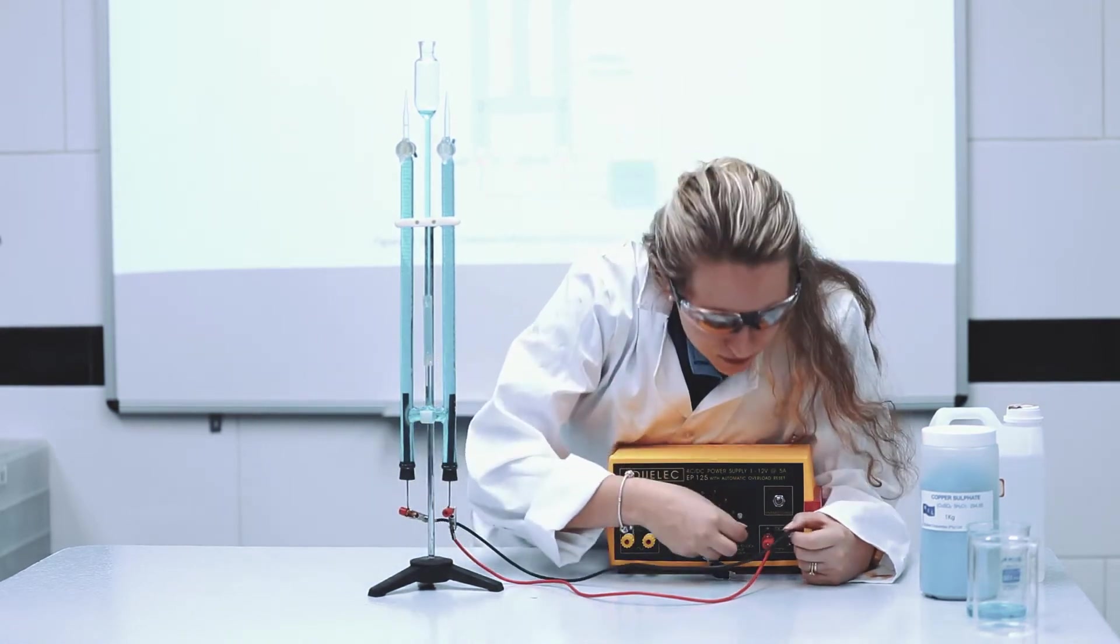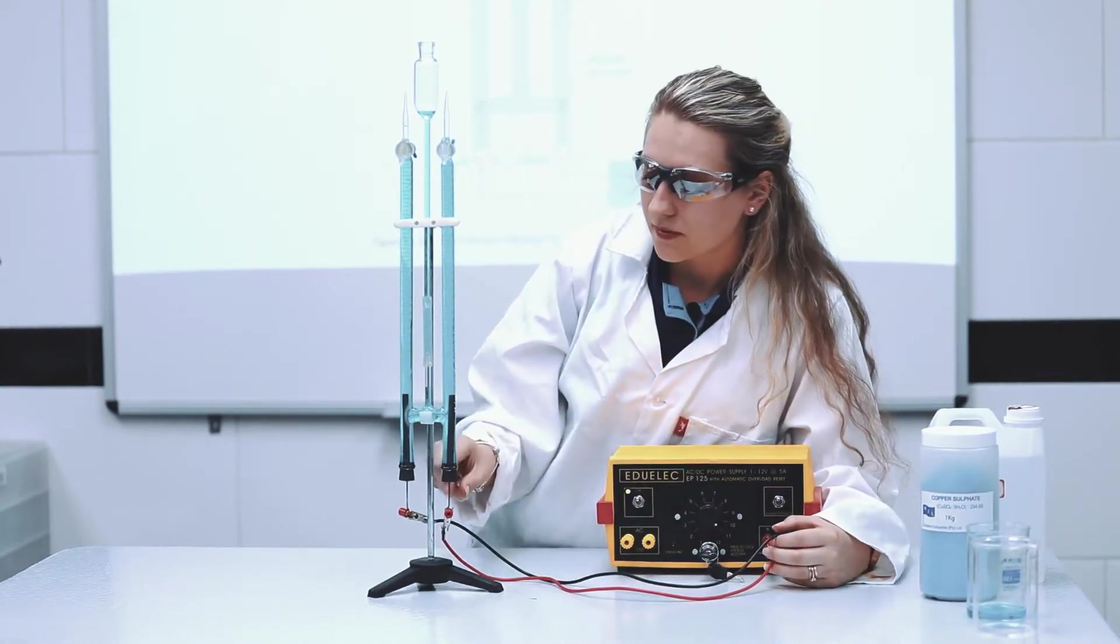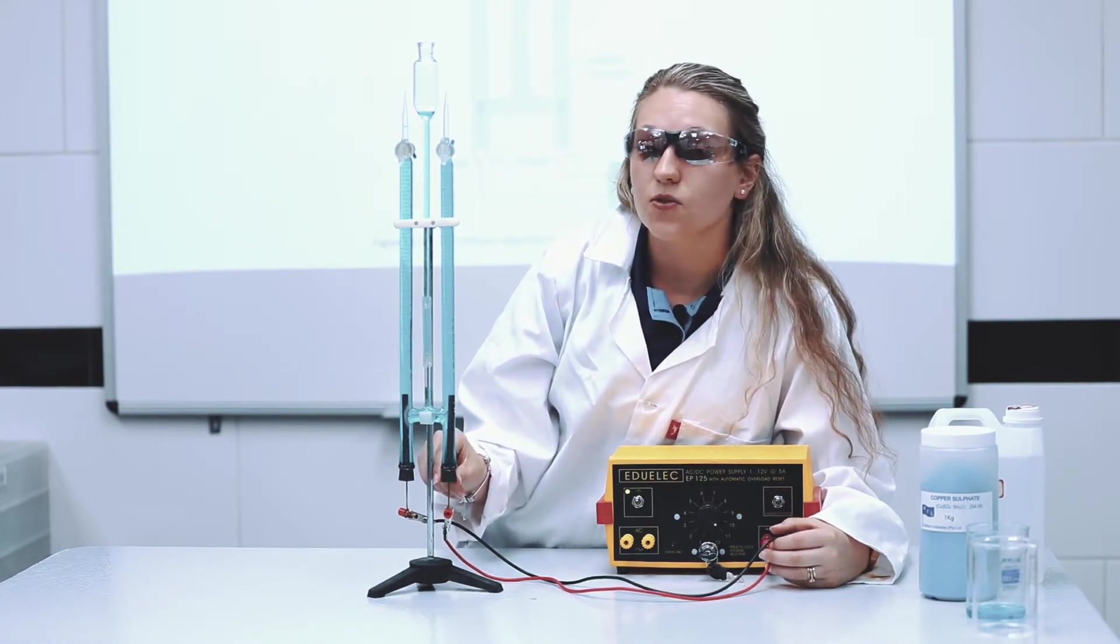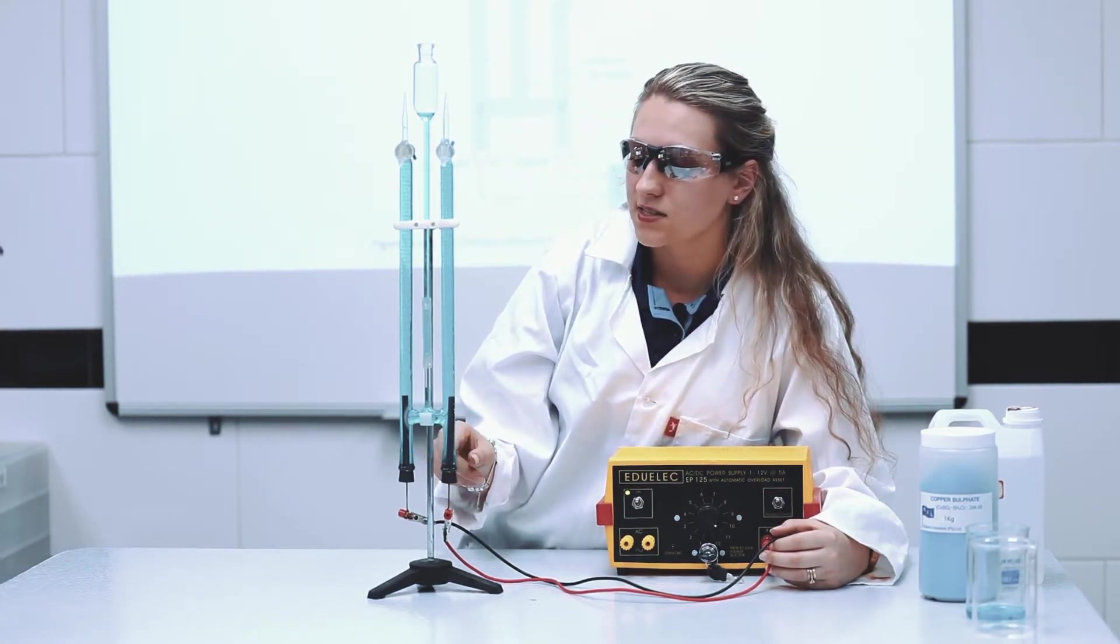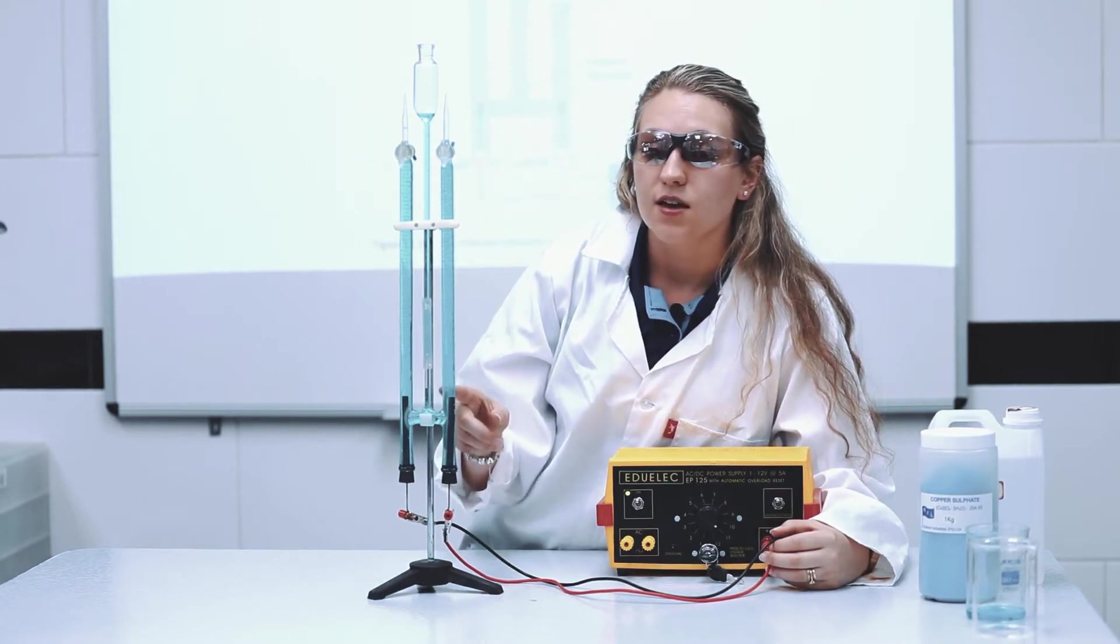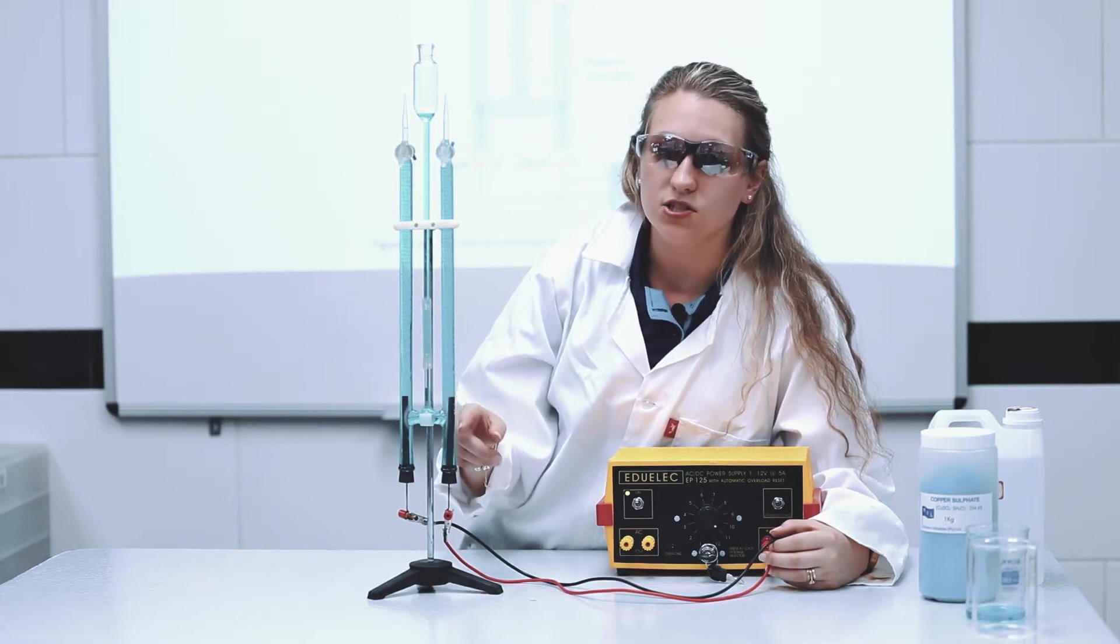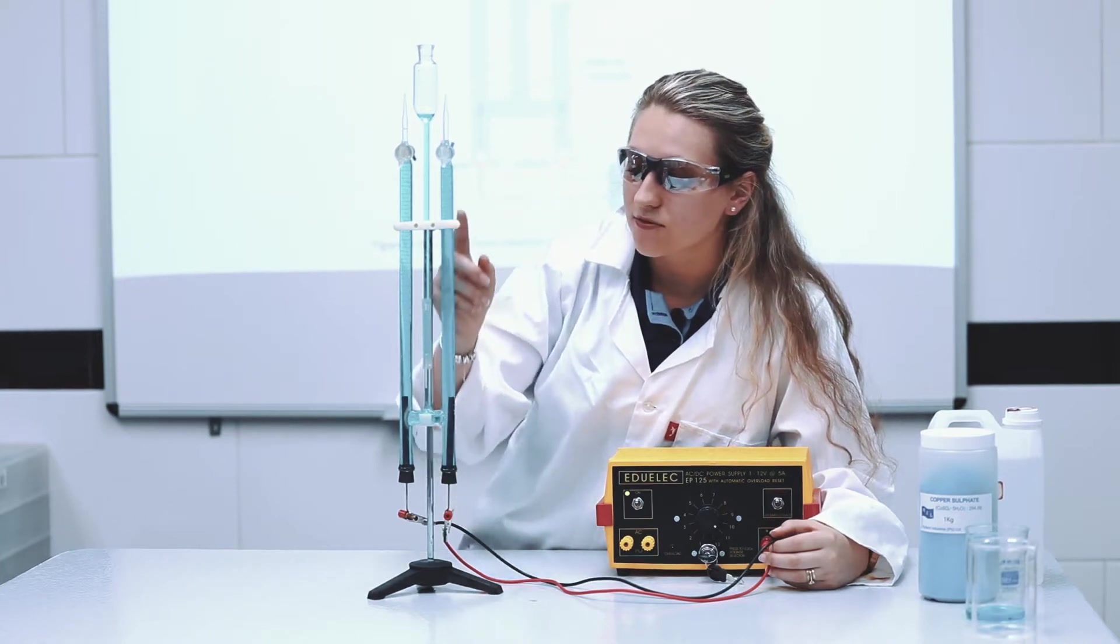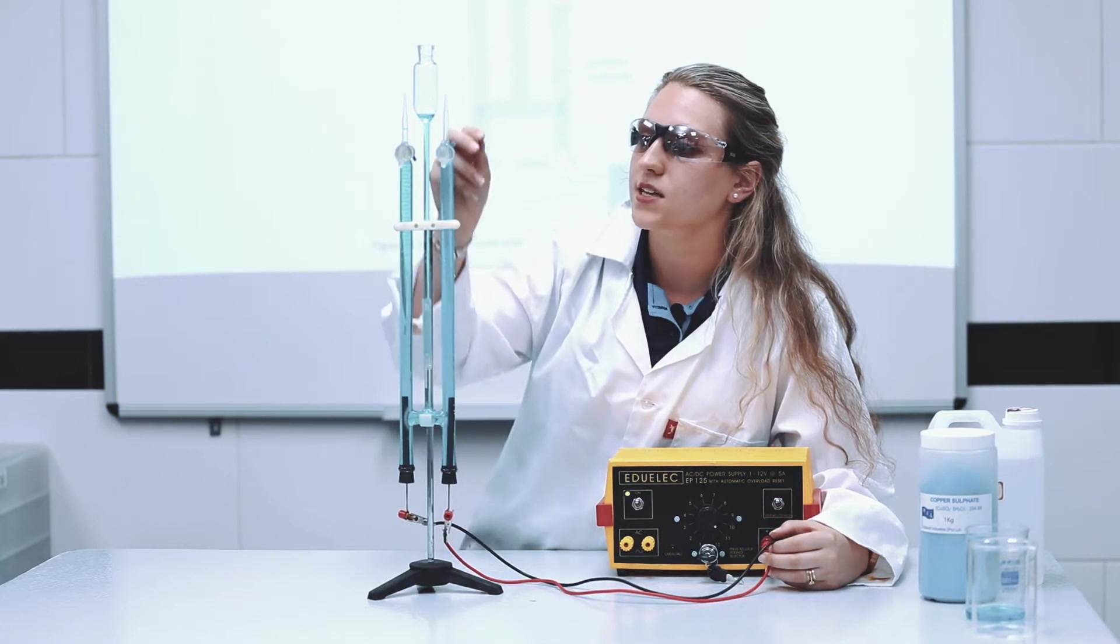Then if you follow your positive terminal all the way, you can see that it's attached to your positive electrode, which is your anode. So remember that anions move towards your anode. So in this case, remember that sulphates are never discharged, but instead your hydroxides are going to be discharged as oxygen gas. And that's why you can see all the little bubbles here forming, which is all oxygen that is trying to escape through the tap.